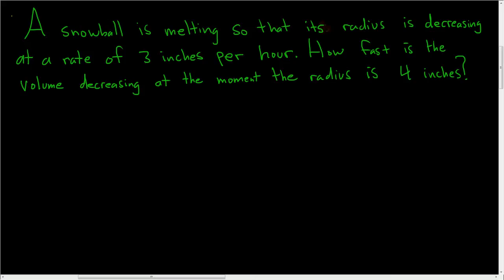A snowball is melting so that its radius is decreasing at a rate of 3 inches per hour. How fast is the volume decreasing at the moment the radius is 4 inches? Let's go ahead and work this out.